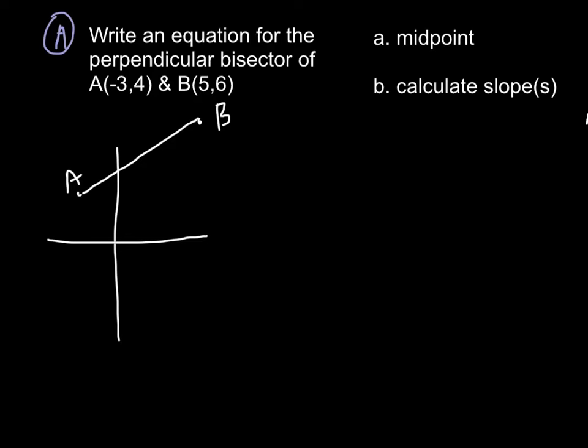And we have this line, and we want to know the equation for a perpendicular bisector. If you remember from geometry, a perpendicular bisector is anything that bisects, so it makes two different sections, and it forms a right angle to our original line. So this would be our perpendicular bisector, and we want the equation of that line.